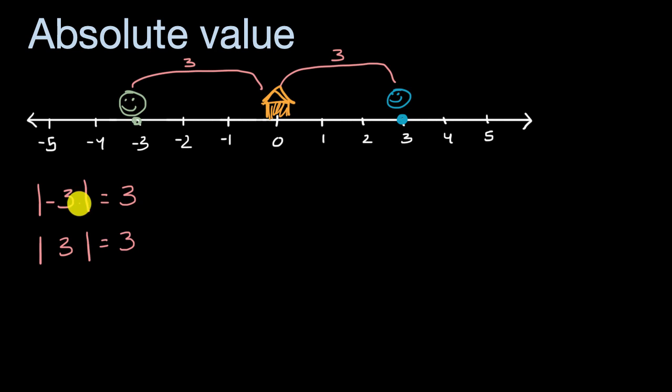If you're taking an absolute value of a negative number, you get the number without the negative. And if you take the absolute value of a positive number, it just equals itself again. But the reason why that is the case is because we're just saying, how far is that thing from zero?